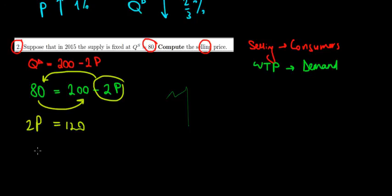So the price equals 120 divided by 2, which equals 60. That's the price consumers are willing to pay.